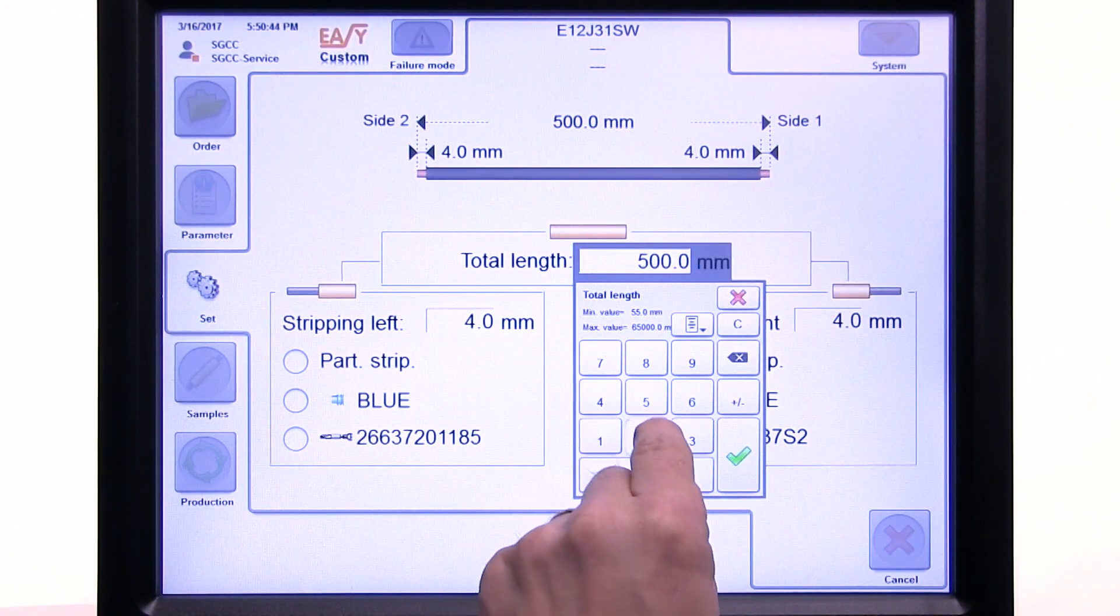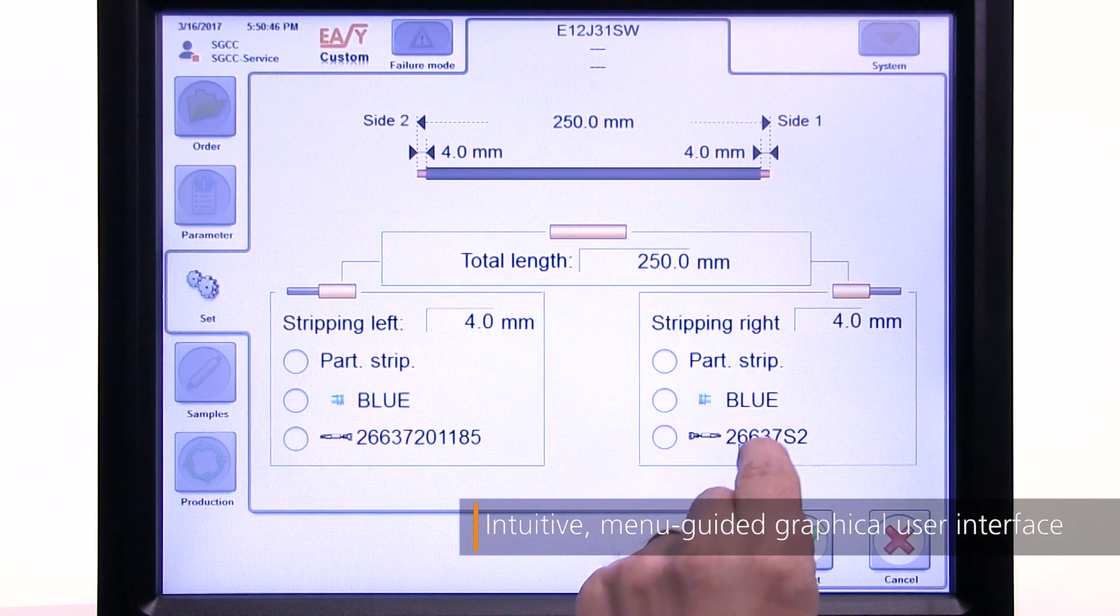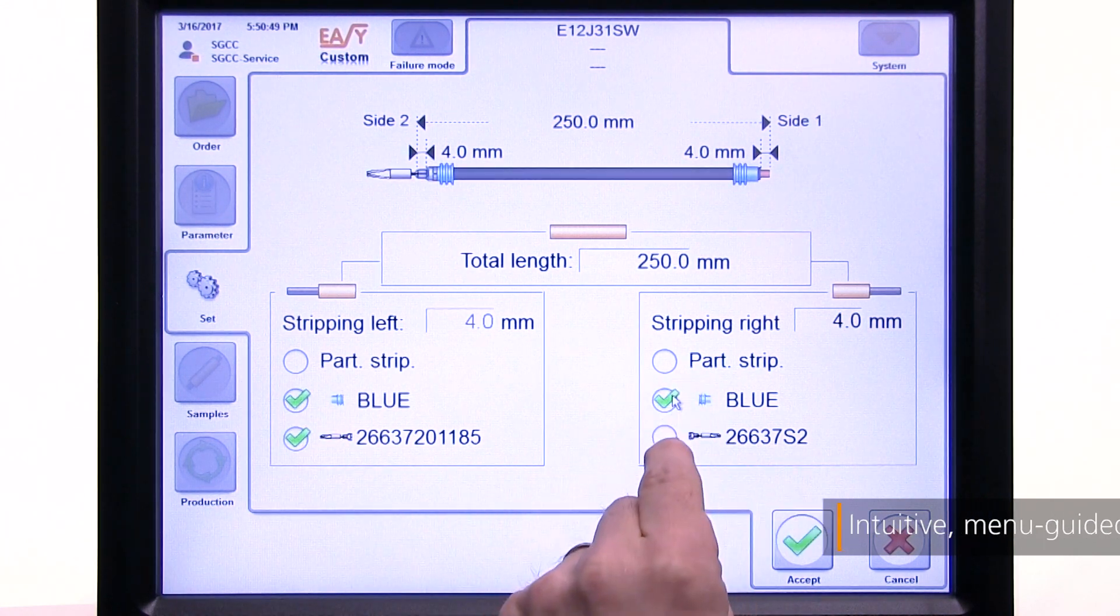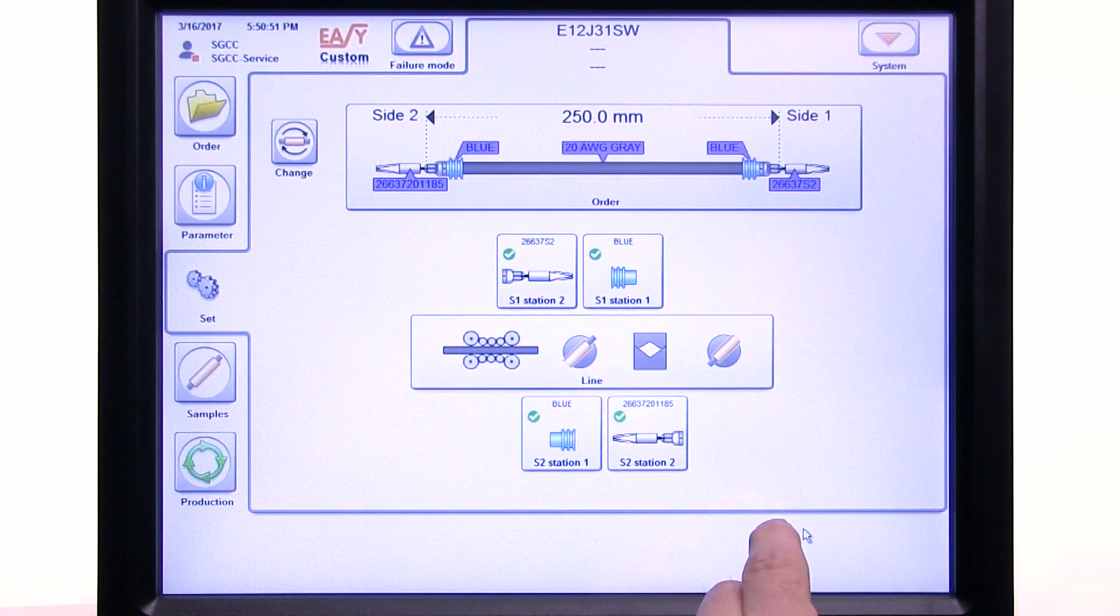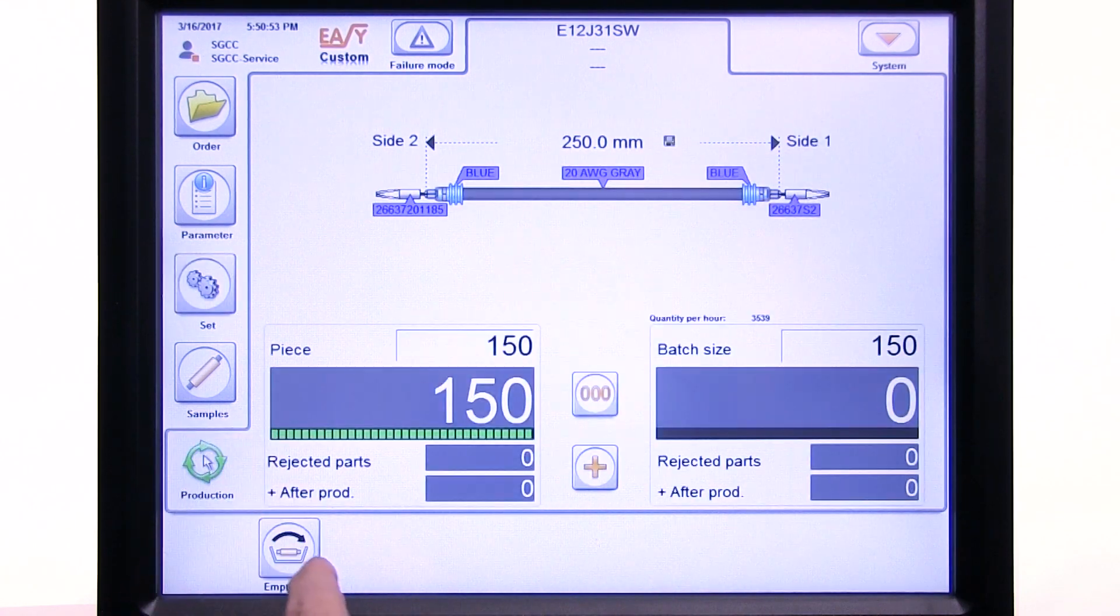Production parameters are entered via the touch screen. All parameters, such as wire data, crimp data, or seal data, can be saved and retrieved for future use.